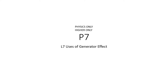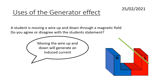This is the GCSE physics presentation looking at the uses of the generator effect in terms of alternators and dynamos. To get started, a student is moving a wire up and down through a magnetic field. Do you agree or disagree with the student's statement that moving the wire up and down will generate an induced current?